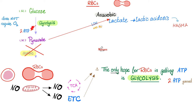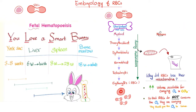Glycolysis will yield only two ATP molecules, not two dozen or so. Well, better than nothing. But if this red blood cell lacks an important enzyme known as pyruvate kinase, do you think the red blood cell will be able to make energy? No. Without energy, the red blood cell is toast — it will die.